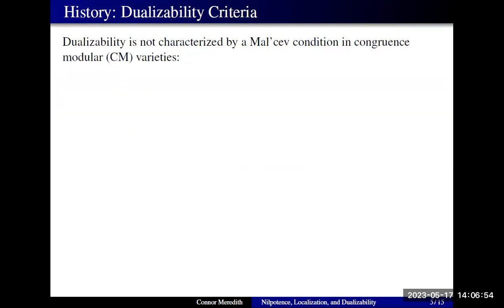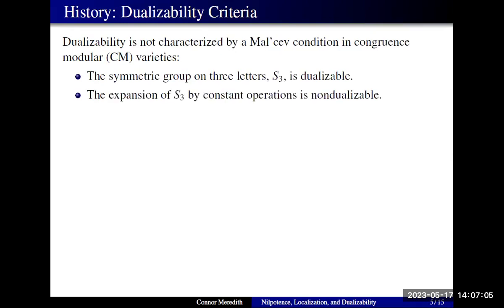Moving to broader settings, we suddenly lose this nice characterization of dualizability. It's known that the symmetric group on three letters is dualizable, yet if you expand the symmetric group by its constant operations, suddenly it's non-dualizable. So dualizability cannot be characterized by a universal set of conditions in this setting, because if it were, S3 would have to have certain term operations, and the expansion by constants would have those same operations.